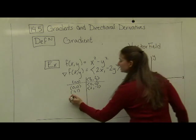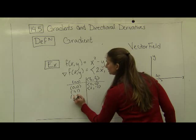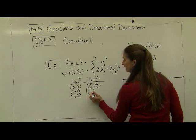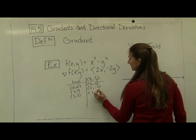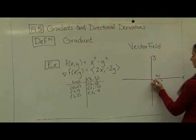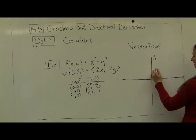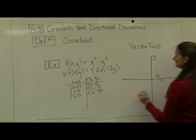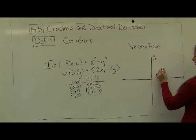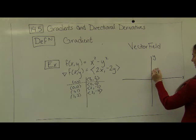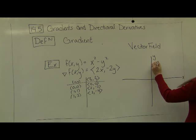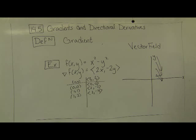And then as I plot different points, let's say I plot the point 1, 2, my output is a vector given by 2, negative 4. So as I go over 1 and up 2, my vector is now going to be twice as steep, pointing 2 in the x direction, but negative 4 in the y direction, it's going to go all the way down like this.